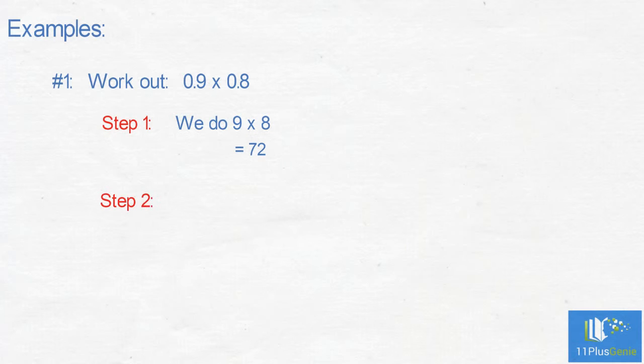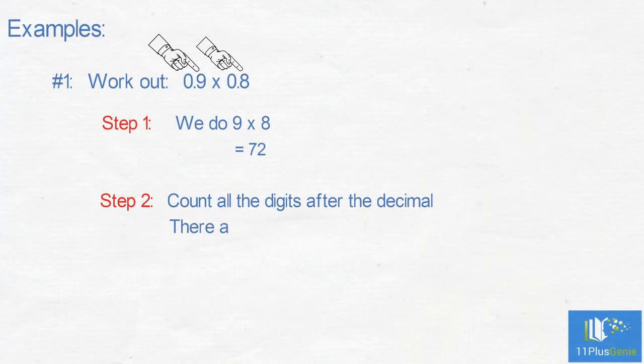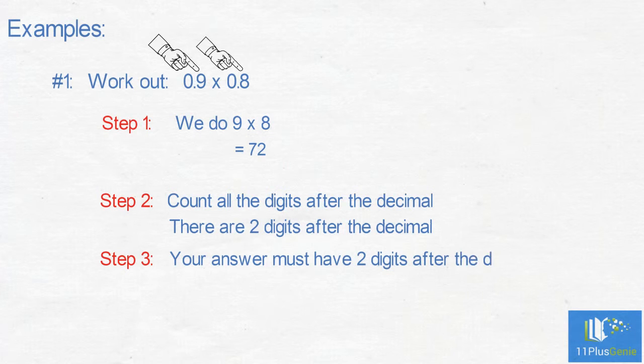Step 2: Count all the digits after the decimal. There are 2 digits after the decimal. Step 3: Your answer must have 2 digits after the decimal.